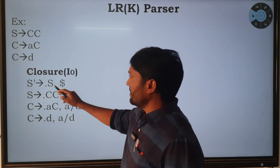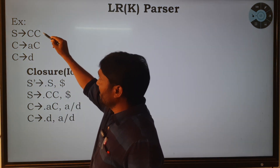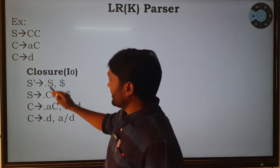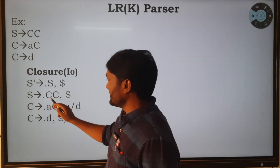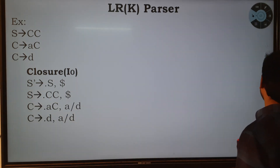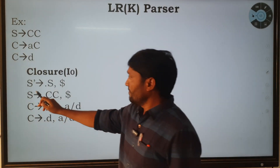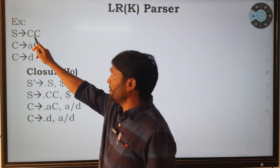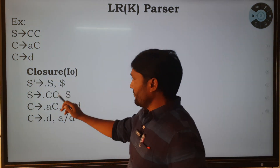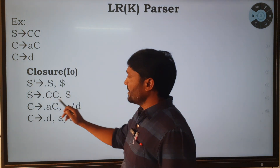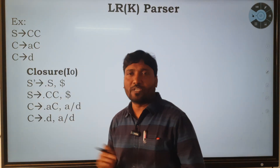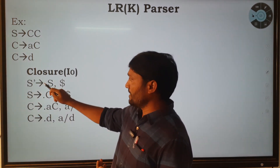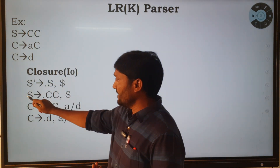Since there is a capital S, there is a production for S — we have only one production. That production is: S → •CC with the input string. We must add the S production because after the dot there is a capital S, and S has one production. We need to calculate the lookahead symbol for this production.